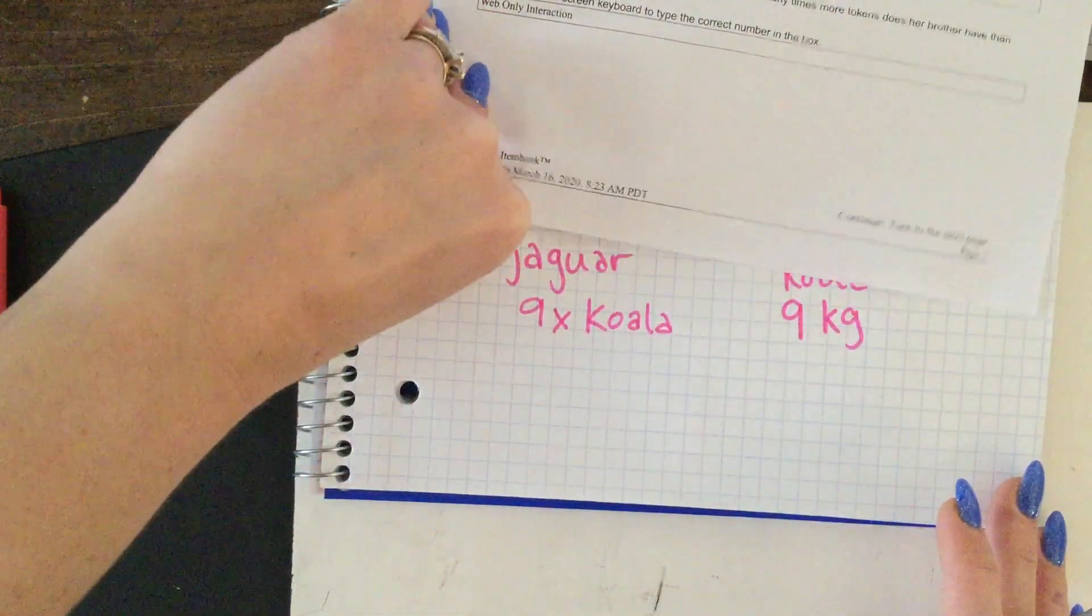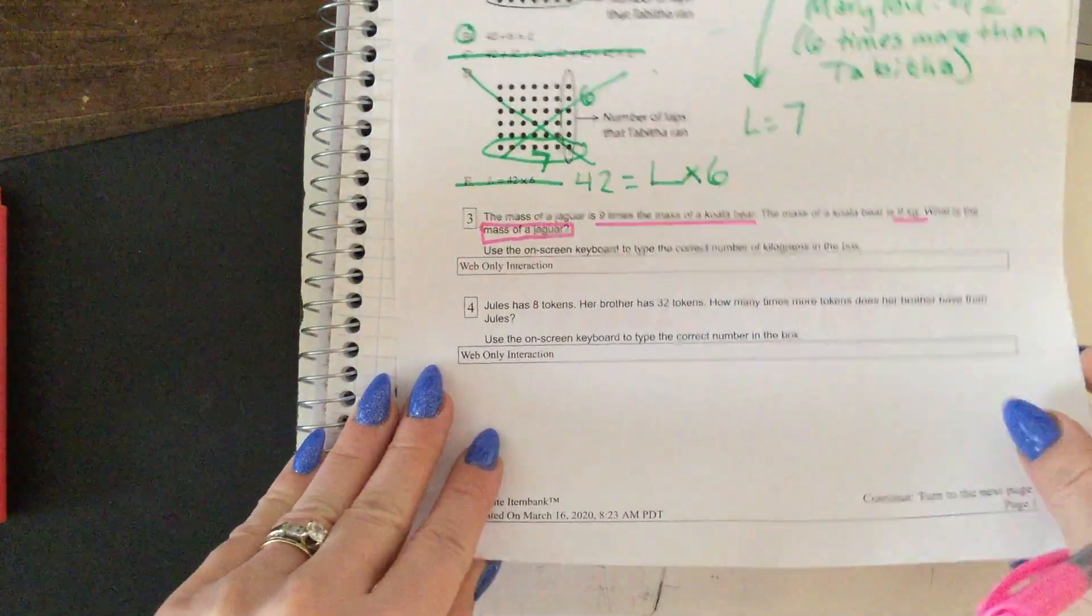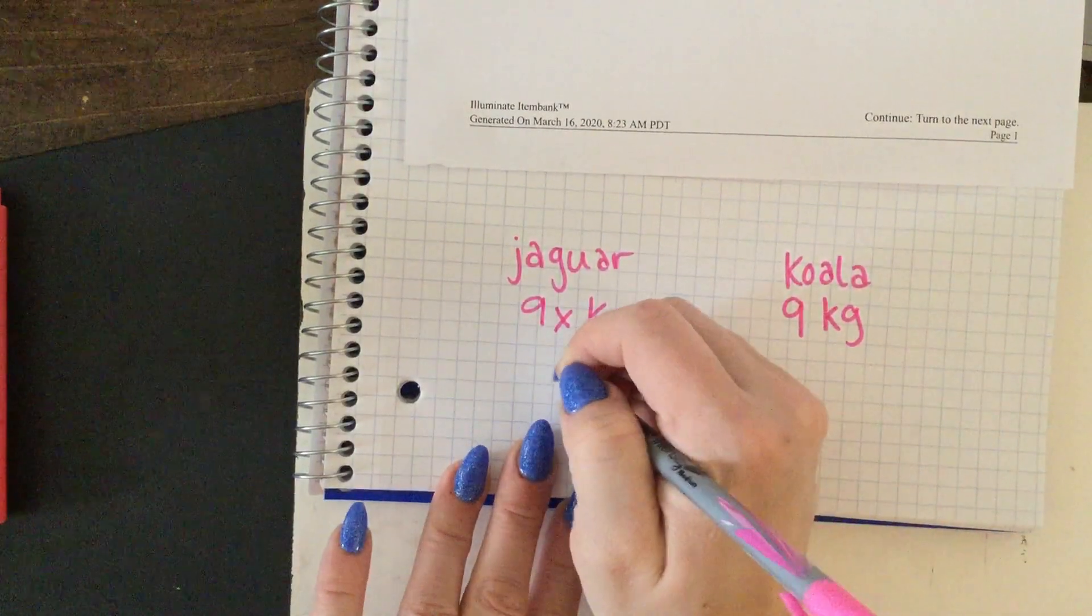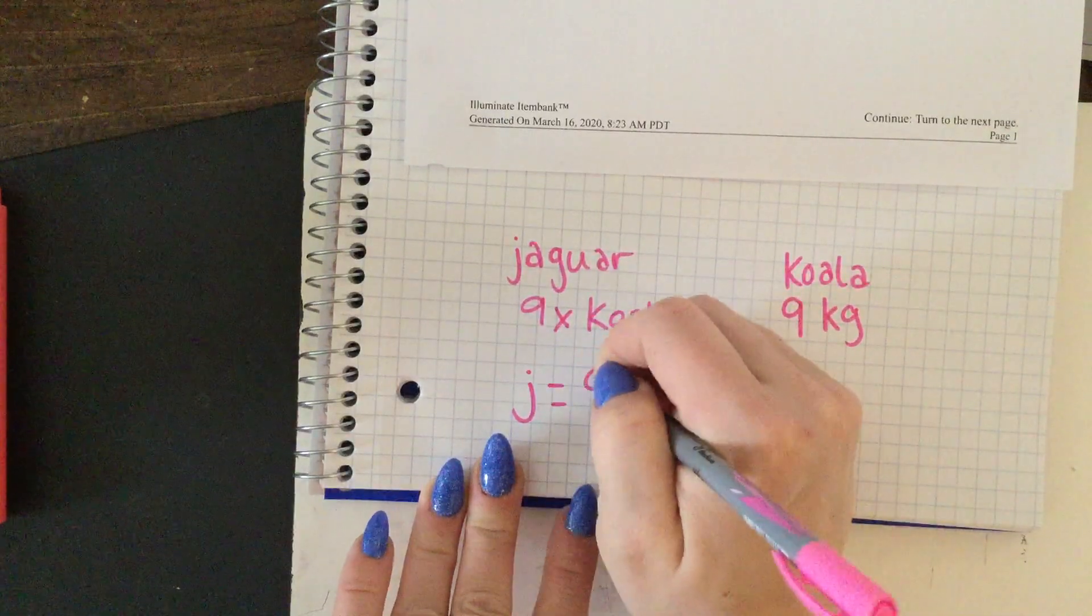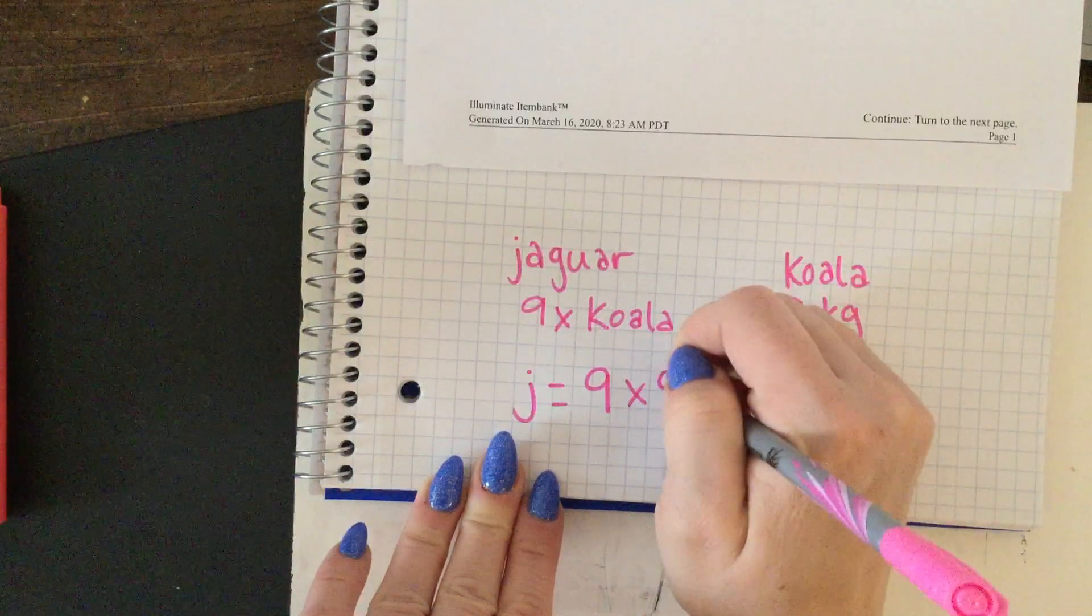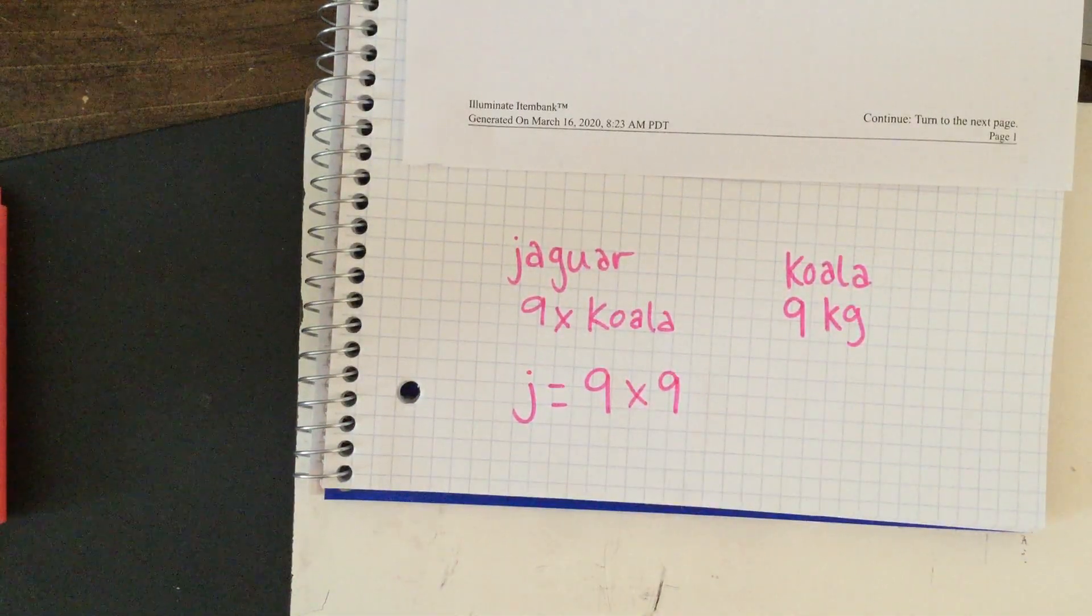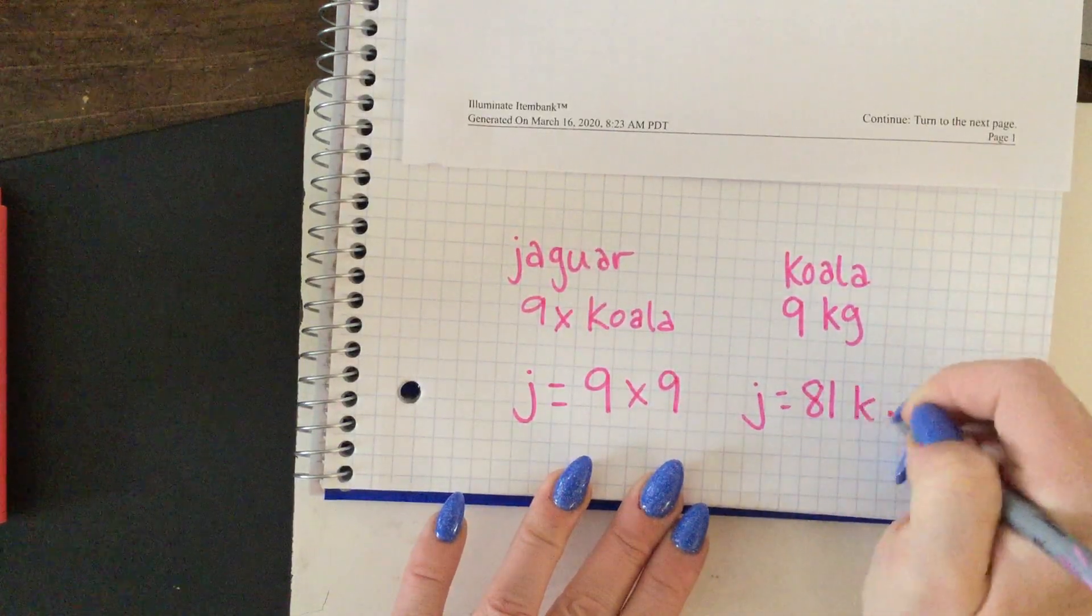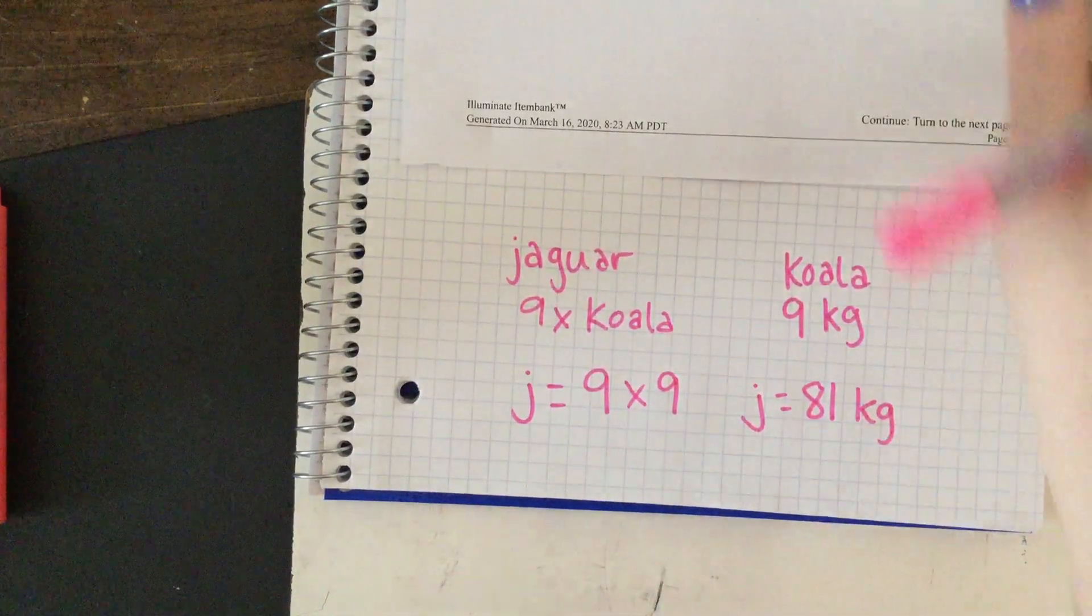We take our jaguar, who is, according to the problem, nine times the mass of a koala bear. You know the koala bear is nine kilograms, so to find out the jaguar, that's nine times nine kilograms. And of course, what do we know about that? The jaguar is 81 kilograms. Nice job!